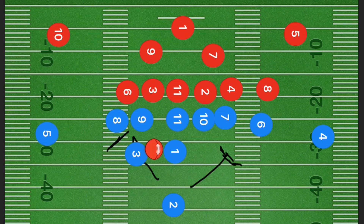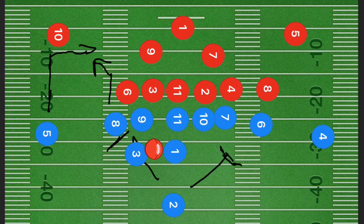Player 5 is going to run downfield about 10 yards and cut back at a 90-degree angle towards the center of the field. Player 8 is going to run straight up about 5 yards and then angle out at 45 degrees towards the left sideline. Our tight end will run up about 10 to 15 yards and cut out towards the left side.